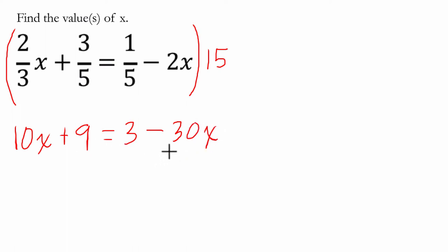I want to get x's on the same side, so I'm going to add 30x to both sides. That gives me 40x plus 9 equals 3. I'm going to subtract 9 on both sides to get negative 6.